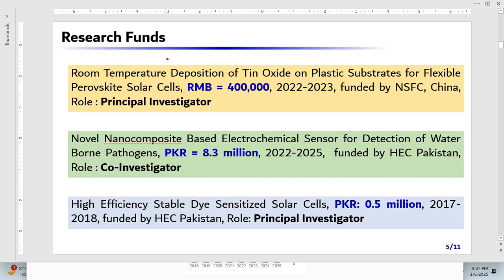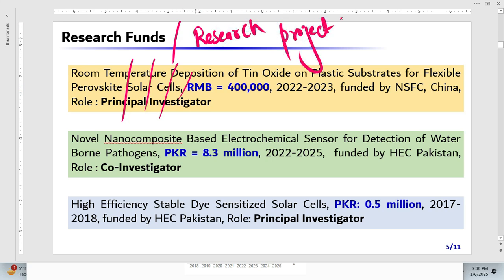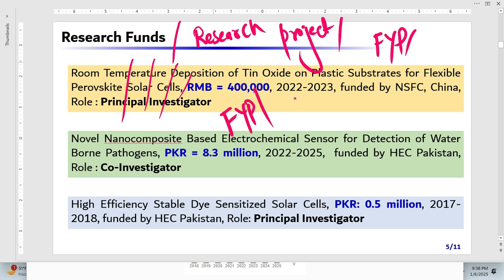Next, I talk about research funds. If you have not secured any national or international funding, write your research projects here instead. Include projects done during college, university, or your final year. I always advise students to record and keep records of all projects — many say they did many projects but have no records. Keep them in a secure place, because people take interest in your project history.